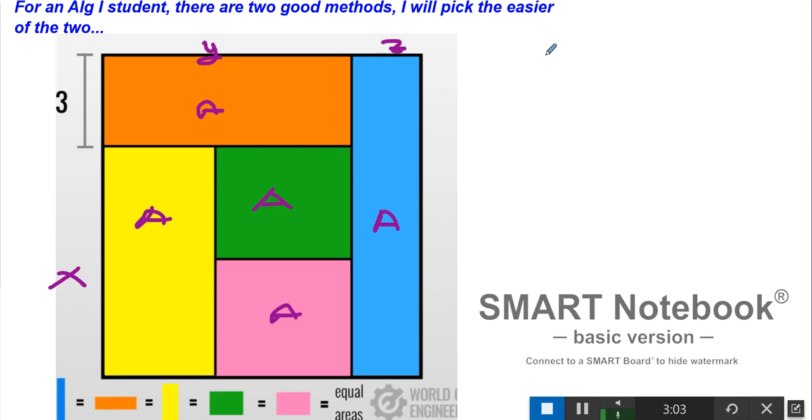When you get to Algebra 1 and you're doing systems of equations, this is a good one to throw at your students if you're a teacher watching this. What we're going to do is look at the areas. We know A, since all the A's are equal, equals 3y. That's one of our equations. If we have two unknowns, we need two equations. If we have three unknowns, we need three equations, and so on.